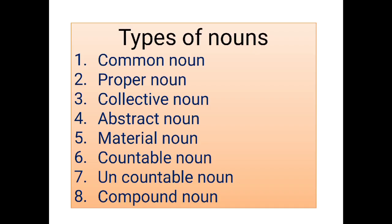Types of Nouns. There are eight types of nouns. They are: Common Noun, Proper Noun, Collective Noun, Abstract Noun, Material Noun, Countable Noun, Uncountable Noun, and Compound Noun.